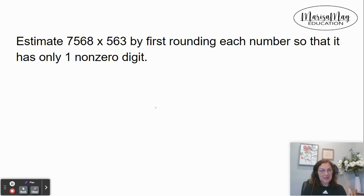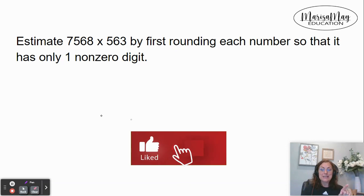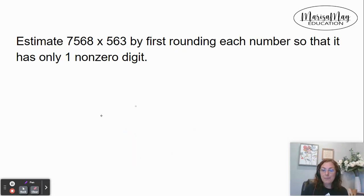In this video, we'll be looking to estimate the product by first rounding the numbers and then doing the multiplication. I think the wording here on the rounding can get a little confusing. It asks us to round each number so that it only has one non-zero digit. Here's what that means in layman's terms: round the number to the highest place value.